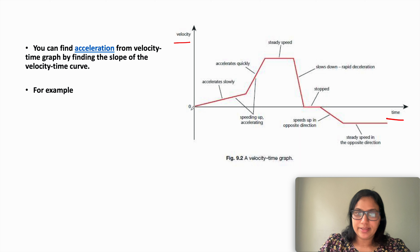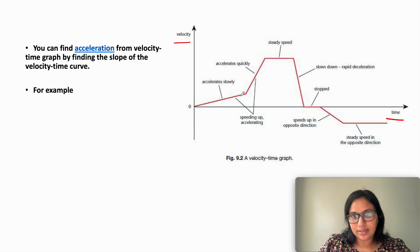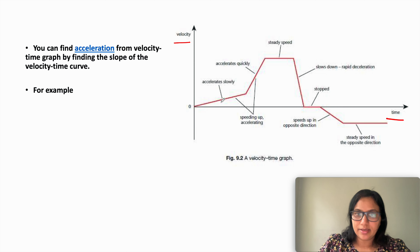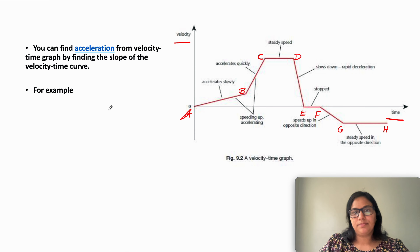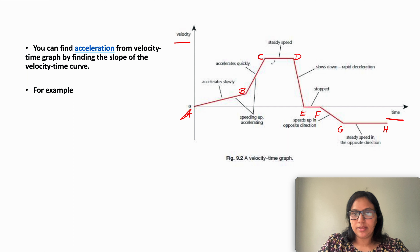The object starts at position O and then begins moving. The straight line with a positive gradient indicates that it accelerates slowly. Let us denote each section as A, B, C, D, E, F, G, and H.